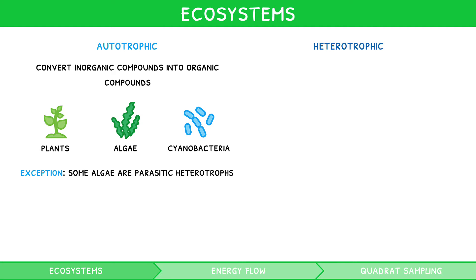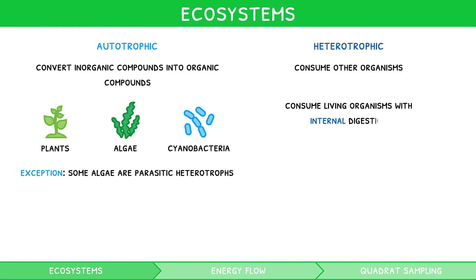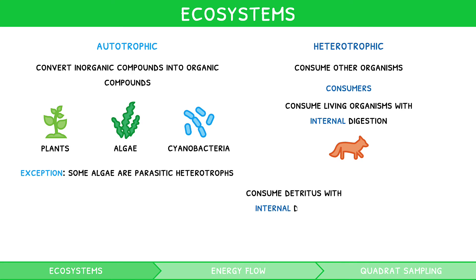Heterotrophic species obtain energy by consuming other organisms. There are three main ways this can be carried out. Direct consumption of other living organisms with internal digestion — organisms that carry this out are known as consumers, for example, a fox. Direct consumption of other decomposing matter or organisms, called detritus, with internal digestion — organisms that carry this out are known as detritivores, for example, an earthworm.